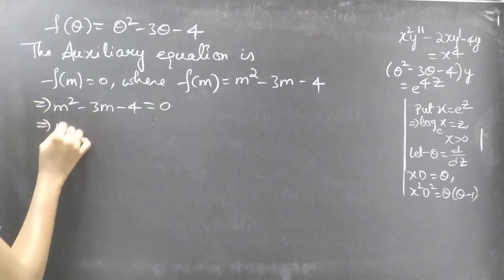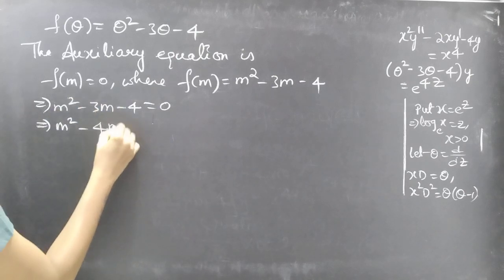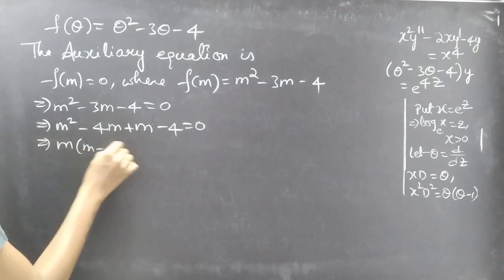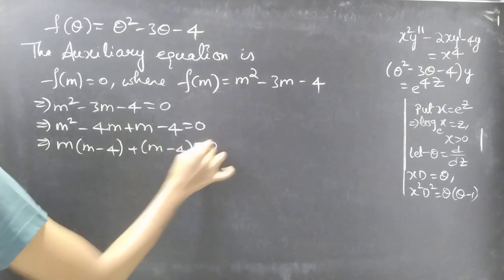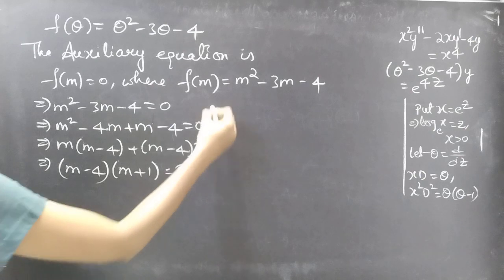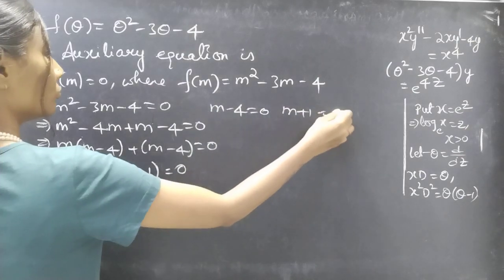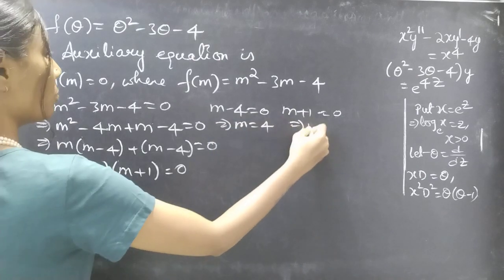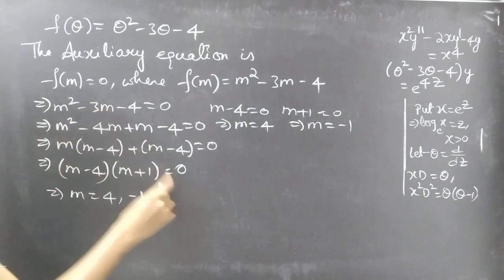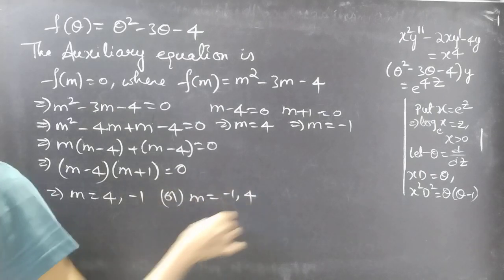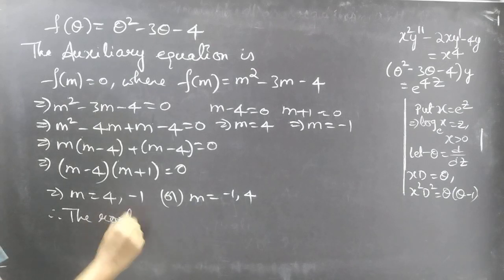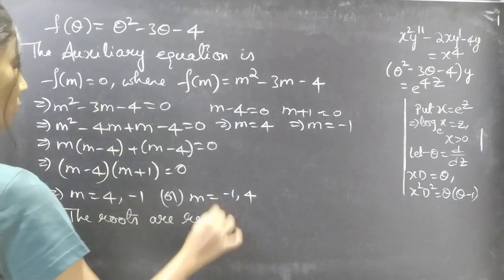The auxiliary equation is m² minus 3m minus 4 equals 0. We split minus 3m as plus m minus 4m, giving m(m minus 4) plus 1(m minus 4) equals 0, so (m minus 4)(m plus 1) equals 0. Equating each factor to zero: m equals 4 and m equals minus 1. These are the real and distinct roots of the auxiliary equation.